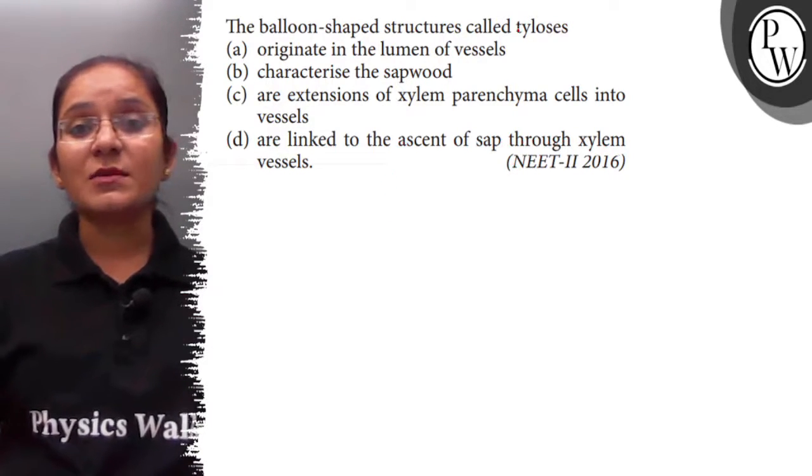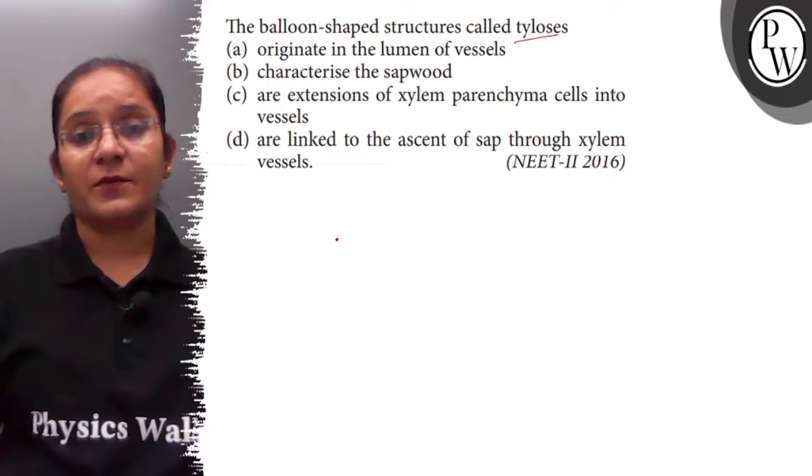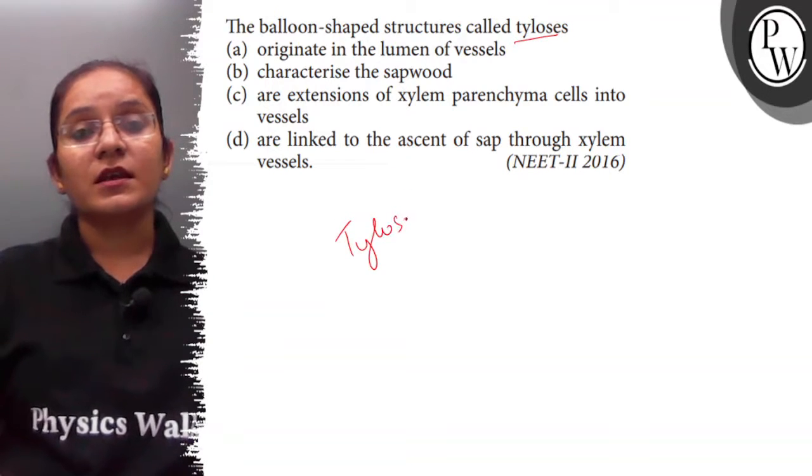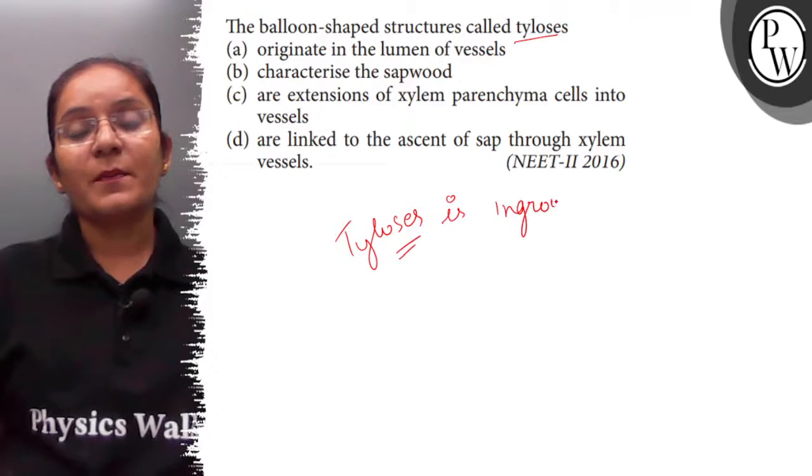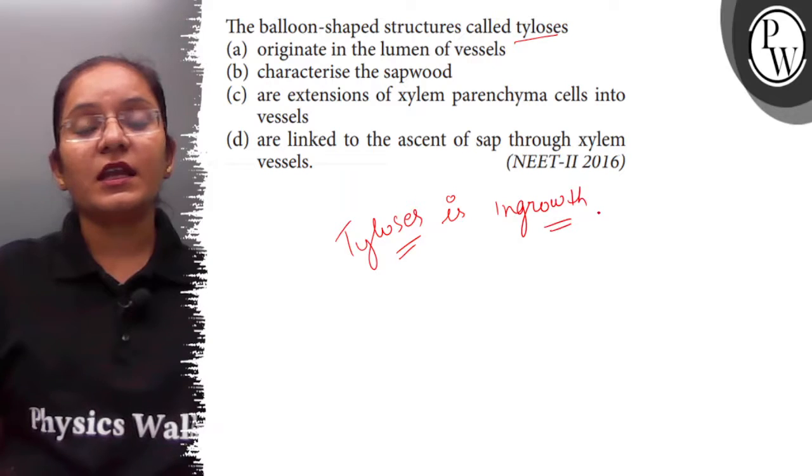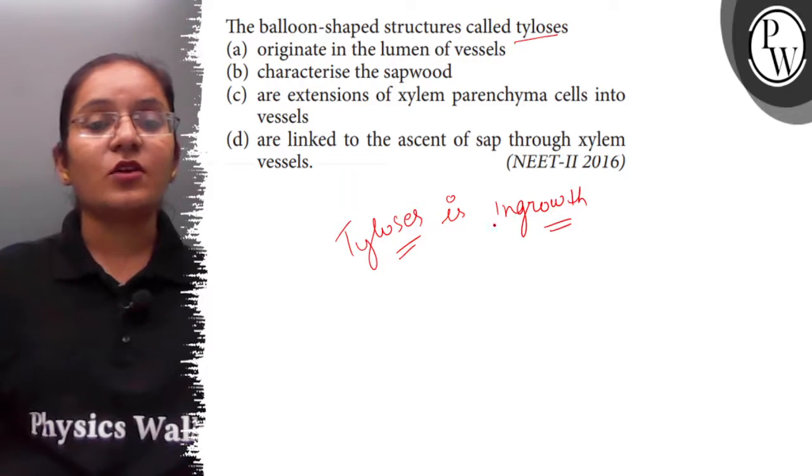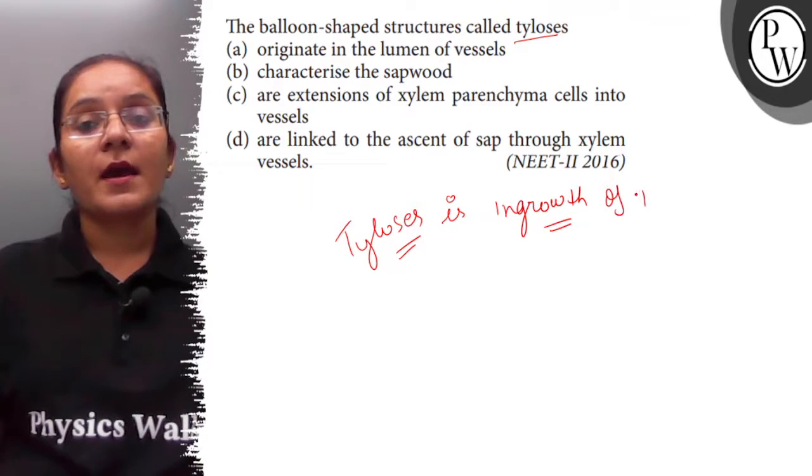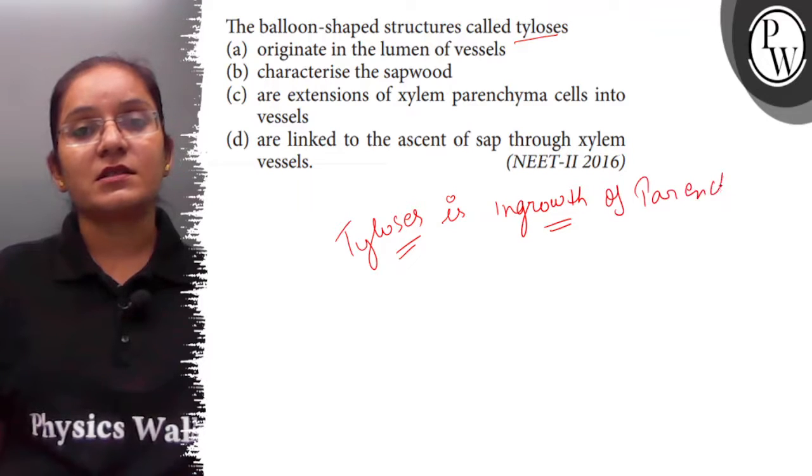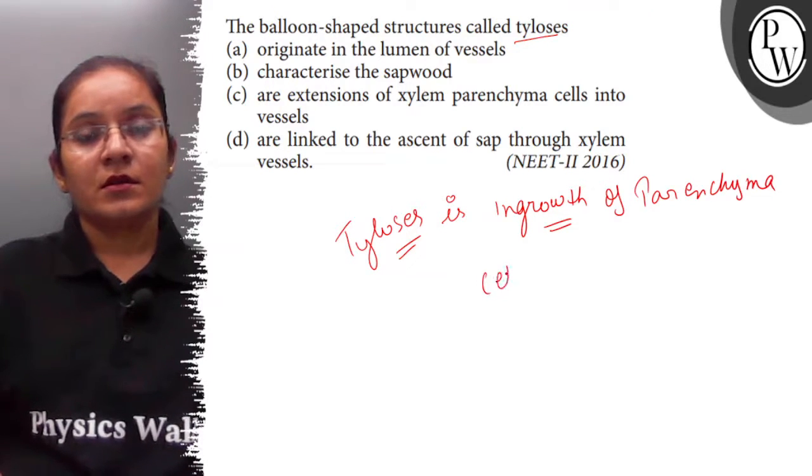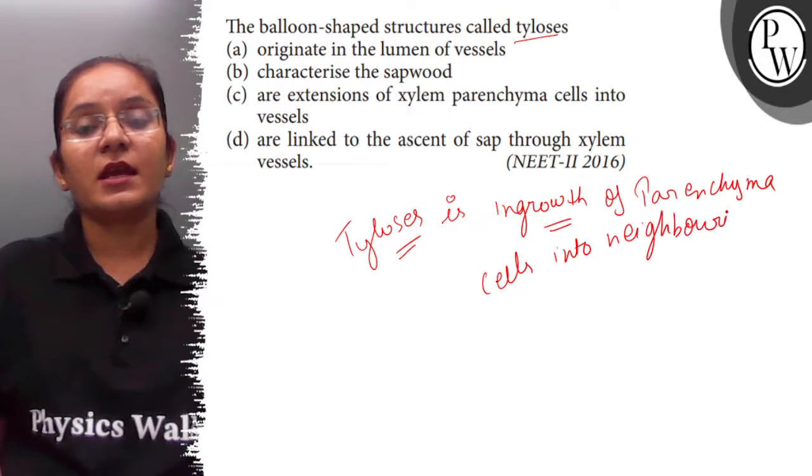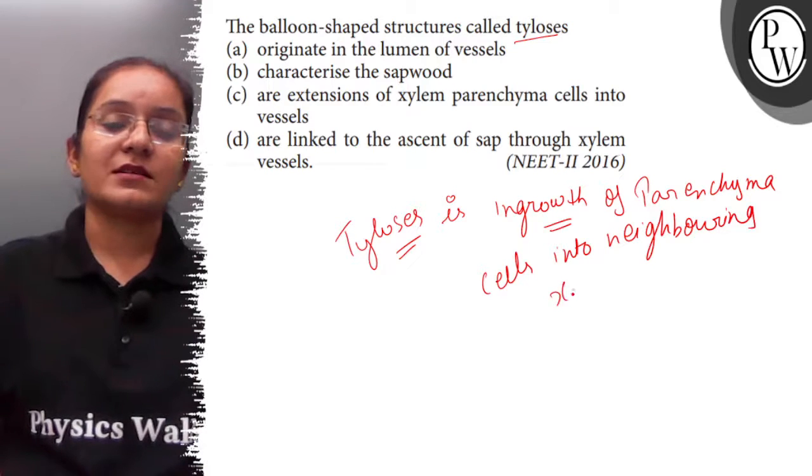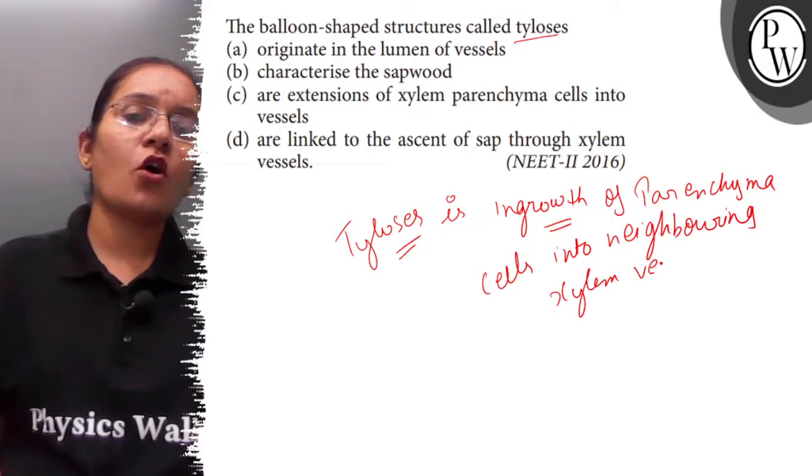So students, understand tylosis. Tylosis is the ingrowth with the passage of time in secondary xylem. Tylosis is the ingrowth of parenchyma cells into neighboring xylem vessels, and they are more common in the old wood.